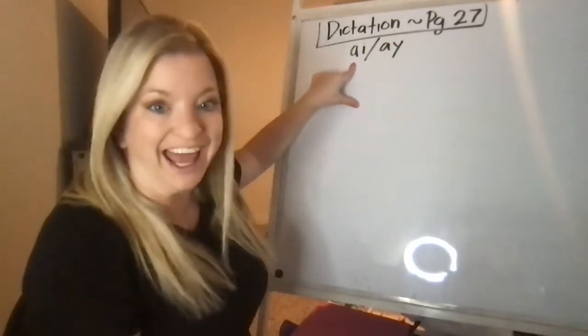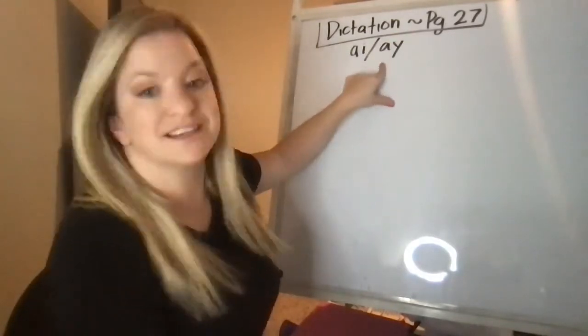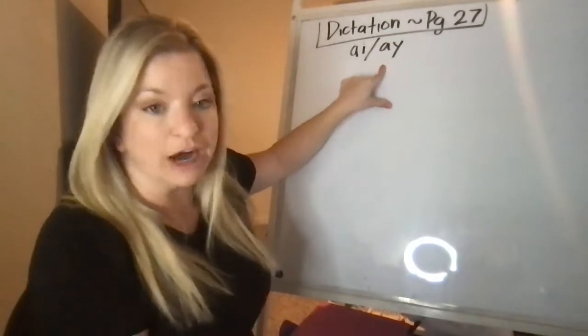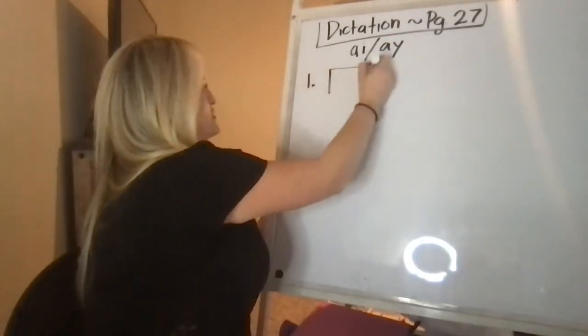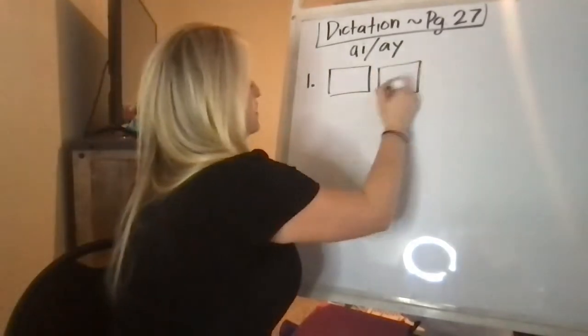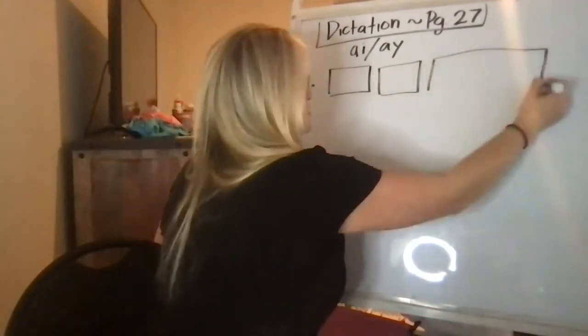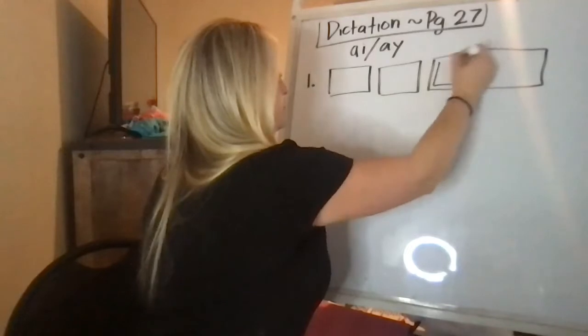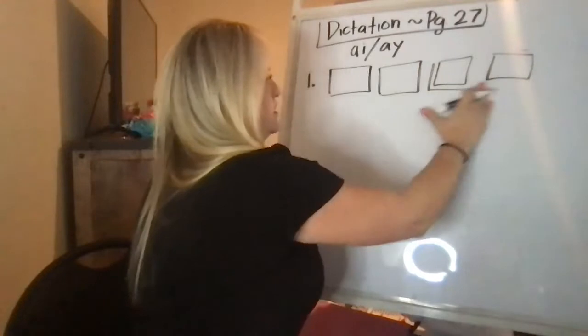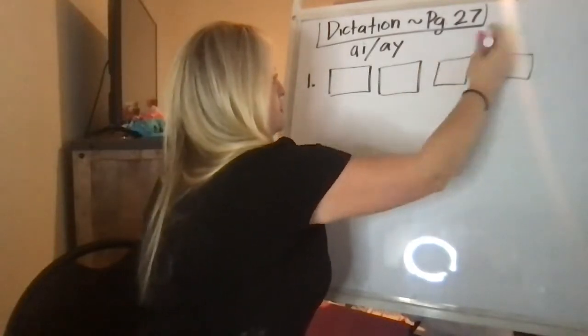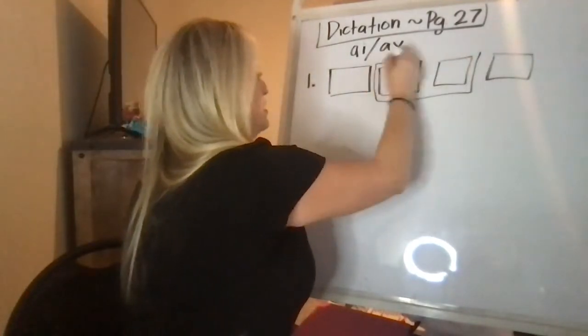So A-I says A and A-Y says A. This is without the final E. So the first one, you're going to have these boxes like this and then there's two boxes that have— oops, I'm sorry, it's not those.